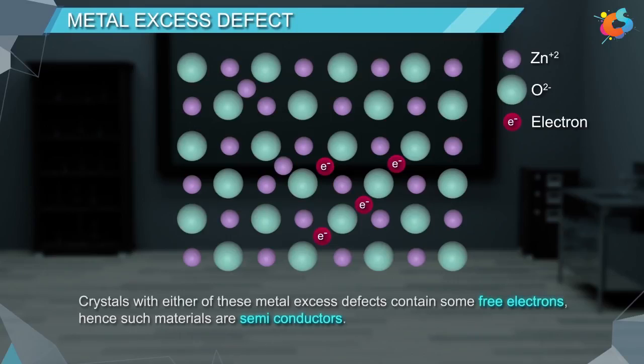Crystals with either of these metal excess defects contain some free electrons. Hence, such materials are semiconductors.